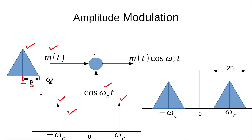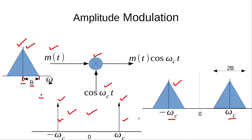Multiplication in the time domain is translated into convolution in the frequency domain. So in the frequency domain, we convolve the message spectrum with this signal. After convolution, two copies of the message signal are formed — the first copy at minus omega_c and the second copy at plus omega_c, corresponding to the locations of the two impulses.